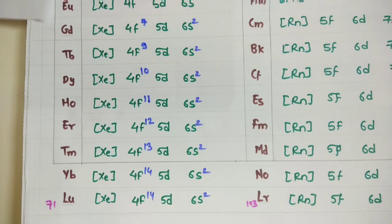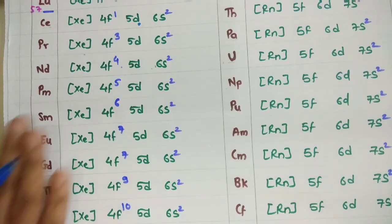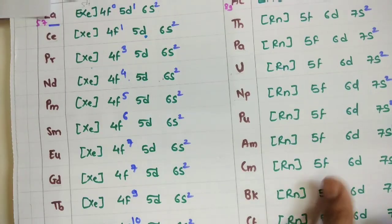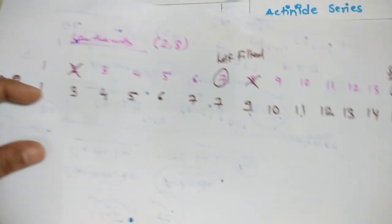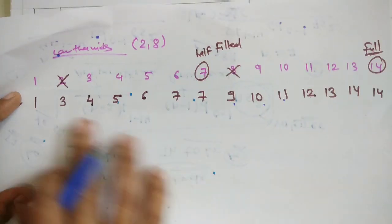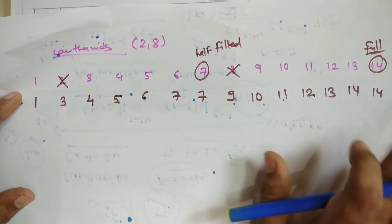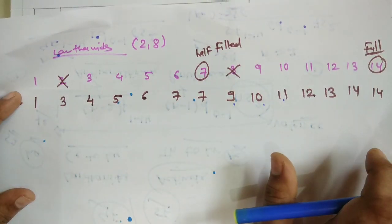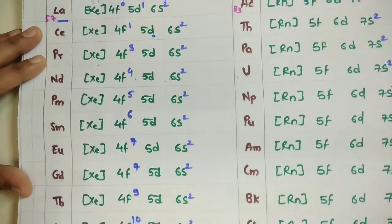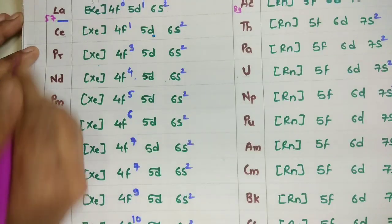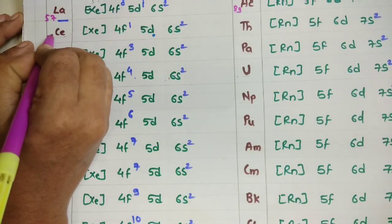So you have filled the electronic configuration in short form using the trick. We started from 0 up to 14. This is how you use the trick to fill the lanthanide series. Now from atomic number 57 onwards: 58 is cerium, then 59, 60, and so on through to 71 (lutetium).